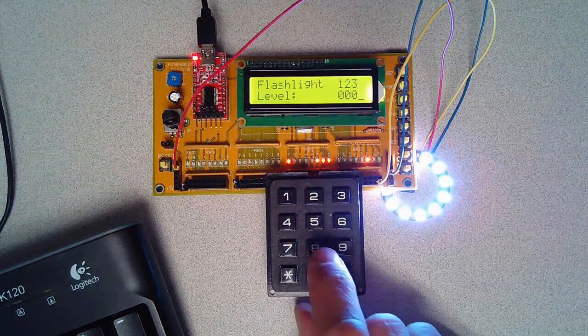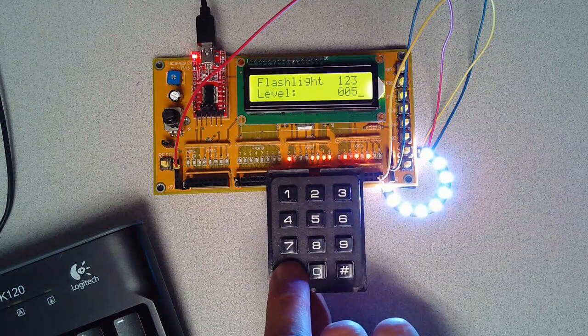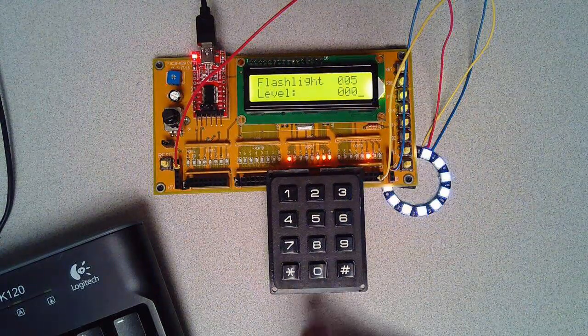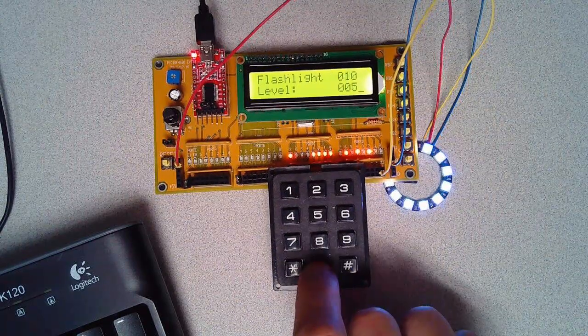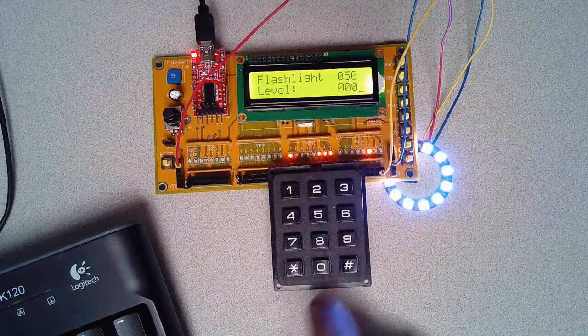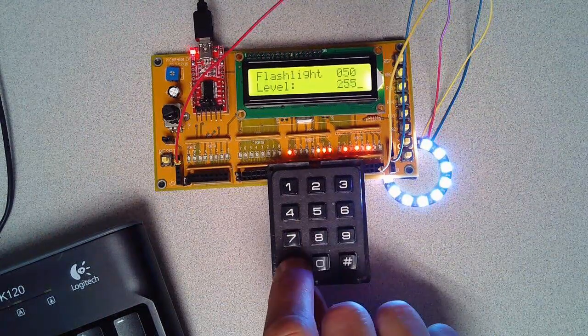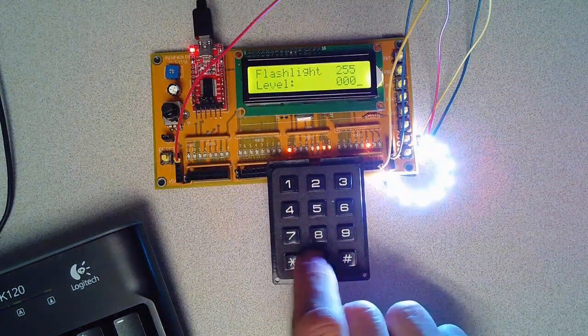255 is full brightness. If I do the number 5, select dimmer 10, brighter 50, and full brightness, and off.